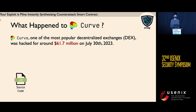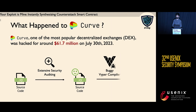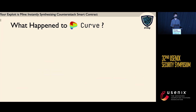So what happened there? The source code of Curve Finance is written in Viper, another smart contract programming language other than Solidity. The code has gone through extensive security auditing, from which we can conclude, although not 100% correct, that the source code is safe. However, there is a deep bug in the Viper compiler, which makes the compiled EVM bytecode vulnerable.